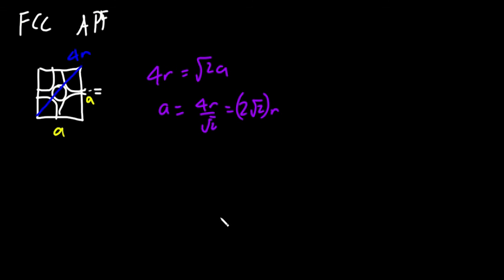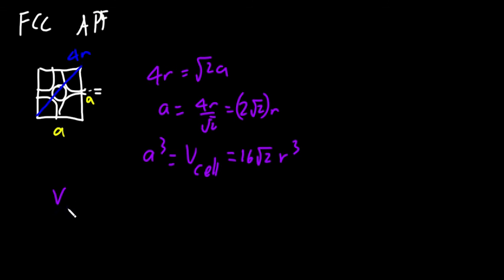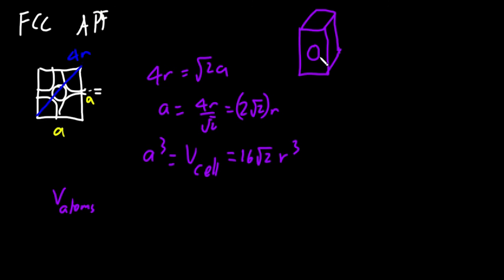The volume of the cell is a³ = (2√2·r)³ = 16√2·r³. For the atom count: each corner contributes one eighth, and there are eight corners giving one whole atom. Each face has a half-atom in the center, and there are six faces giving three atoms. So total atoms per unit cell = 1 + 3 = 4 atoms.